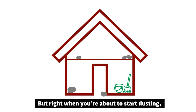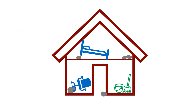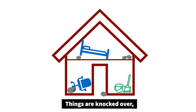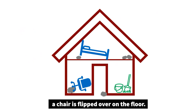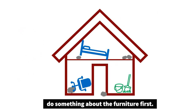But right when you're about to start dusting, you notice all your furniture is messed up. The image now shows tipped over furniture in the house. Things are knocked over — a chair is flipped over on the floor. So you start thinking maybe you should do something about the furniture first.